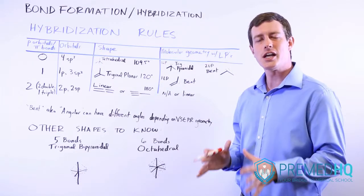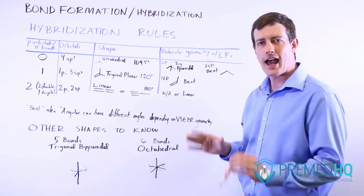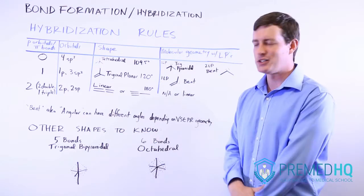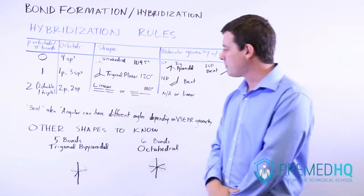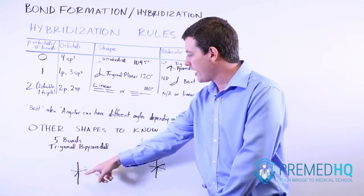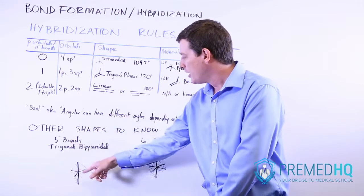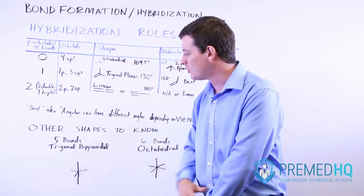But there are two other shapes that come up when you have either five or six atoms bound to a central atom. And so these are the trigonal bipyramidal or bipyramidal, and this is when you have five bonds. Notice the bonds listed here in black. There are five different atoms bound to the central one.